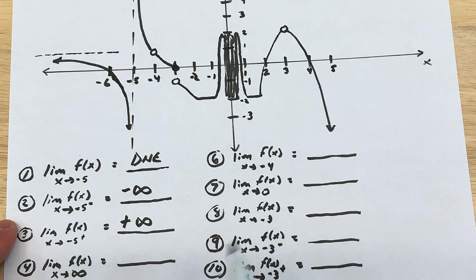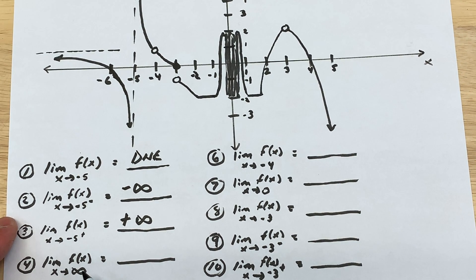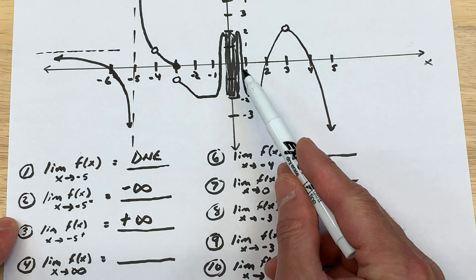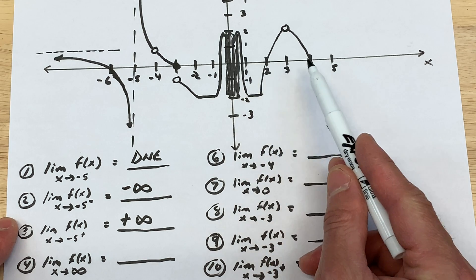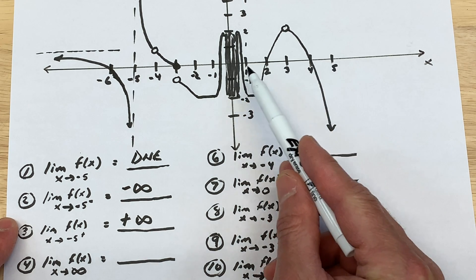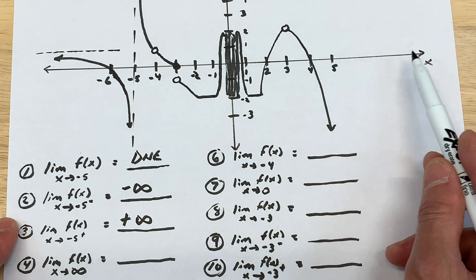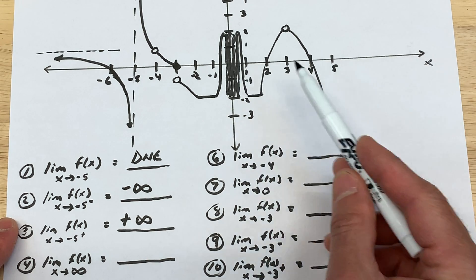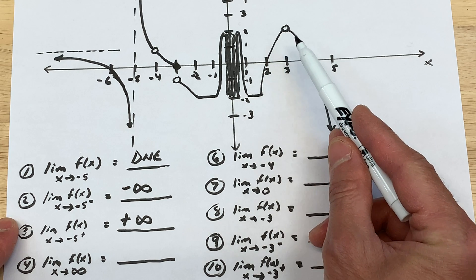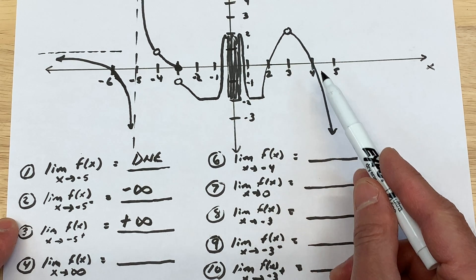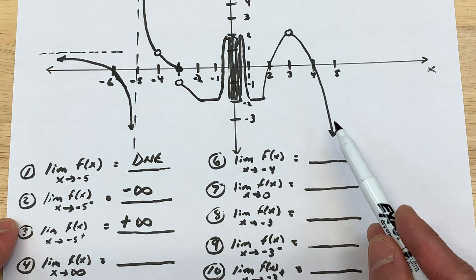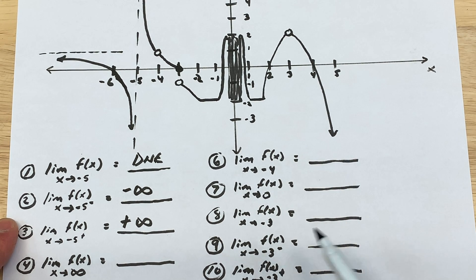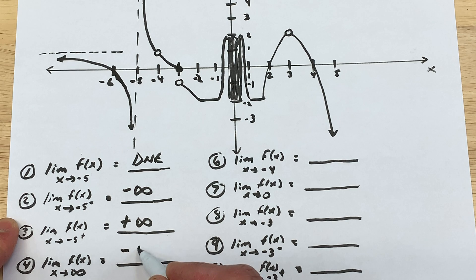For number four: the limit as x approaches positive infinity of f(x). As we go to the right — as x is getting larger and larger — what happens to the y values? You can see they're going down towards negative infinity.